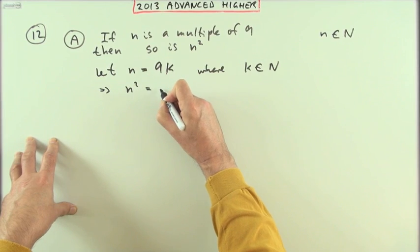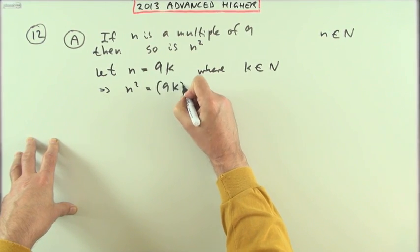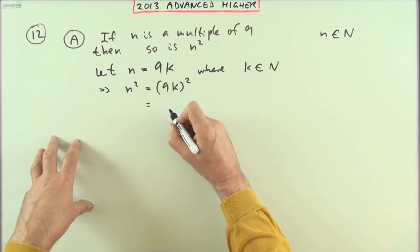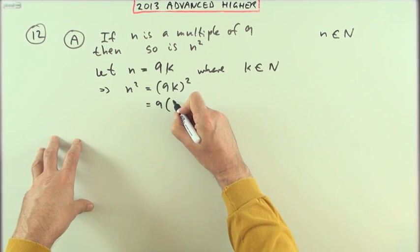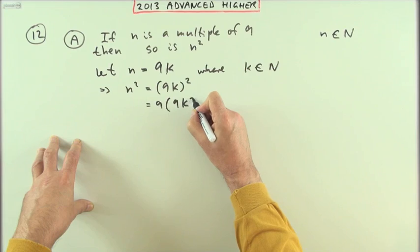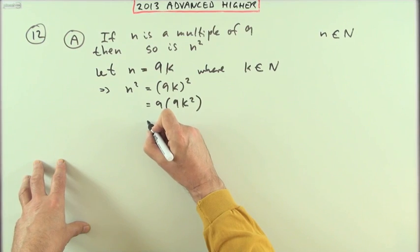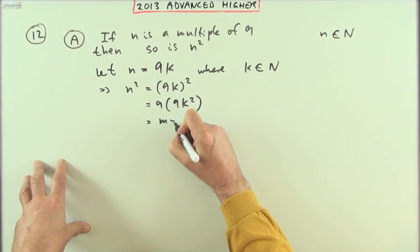That means that n squared would have to be 9k squared, which is 81k squared, but I think I'll just go down to 9 times 9k squared, which is a multiple of 9.